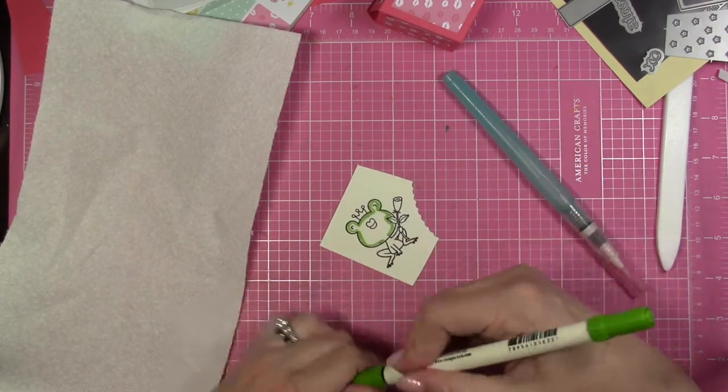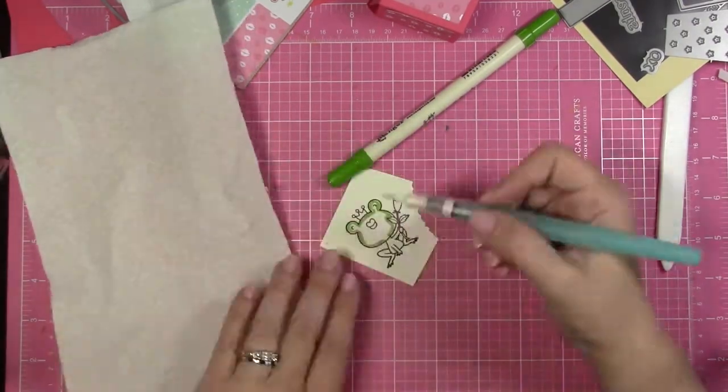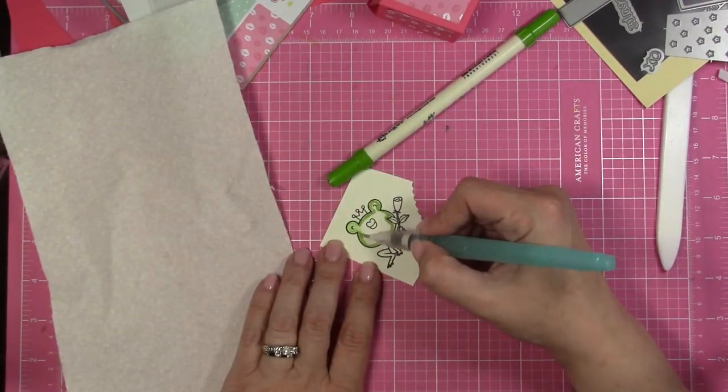So I'm just working, going around, tracing the image along the outside, and then I'm going to pull the color from the outside into the center with the water brush.